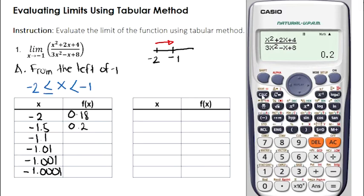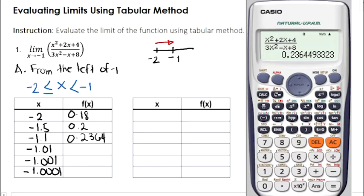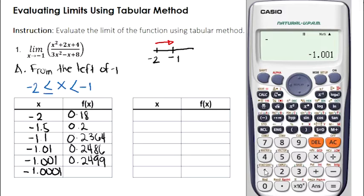If the value of x is equal to negative 1.1, f is equal to 0.2364. We'll use 4 decimal places, so 0.2364. We repeat the same steps for the remaining values. And lastly, if the value of x is equal to negative 1.0001, the value of f is equal to 0.25.